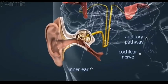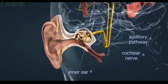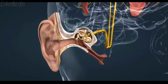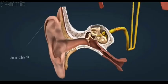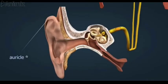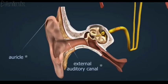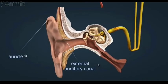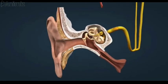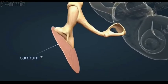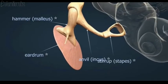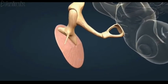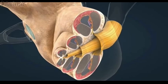This happens because the last of the three bones in this chain, the stapes, sits in a membrane-covered window in the bony wall which separates the middle ear from the cochlea of the inner ear. As the stapes vibrates, it makes the fluids in the cochlea move in a wave-like manner, stimulating the microscopically small hair cells.